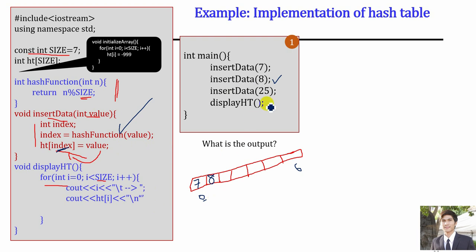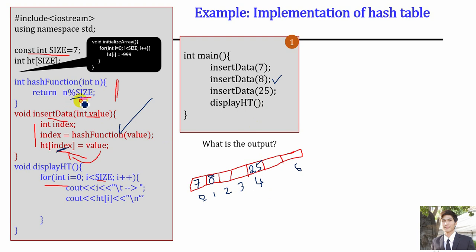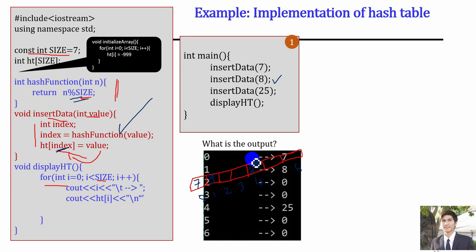For number 25: 25 divided by 7 gives a remainder of 4, so number 25 is inserted at position 4. When we display our array, the other positions that were not filled are 0 by default. So as you can see, at position 0 we have number 7, at position 1 we have number 8, and at position 4 we have number 25.